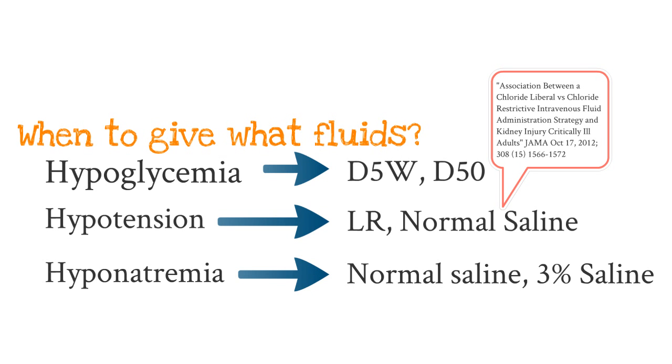Now if they are hyponatremic and not actively seizing, try to use normal saline so you can bring them up very slowly. If you notice you are bringing them up too fast, use a hypotonic solution like D5 half normal to level off their sodium level. That way you can prevent them from developing central pontine myelinolysis because they were corrected too quickly.